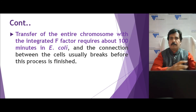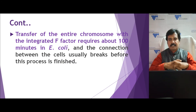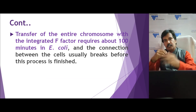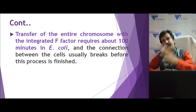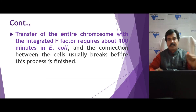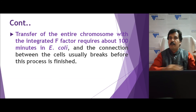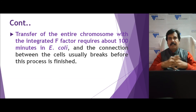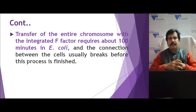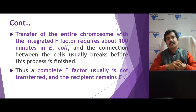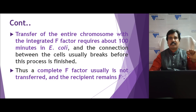Generally, the entire host chromosome is not transferred to the recipient cell. Unlike F plus into F minus conjugation, where the F minus cell can be converted to F plus, that does not happen here. The transfer of the fertility factor along with all genes requires more time — for example, in E. coli it needs 100 minutes for complete transfer. This is not possible naturally, as the connection breaks due to environmental conditions, so the F minus strain remains F minus.